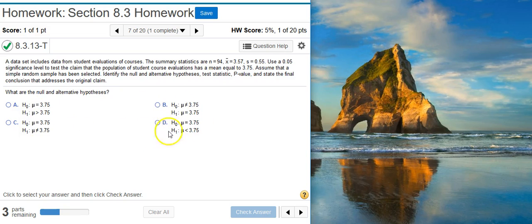So down here in our answer options, we're going to first form our null hypothesis. The null hypothesis, by definition, is a statement of equality. So right off the bat, we can eliminate answer option B because the null hypothesis here says not equal to.